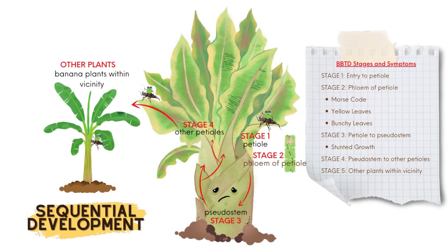In summary, we have learned these things. First, transmission of BBTV is assisted by the insect vector banana aphids. Second, BBTV initially replicates at the phloem of the petioles, then uses the pseudostem as a bridge to infect other parts of the plant, specifically its succeeding leaf petioles. Third, symptoms of BBTD — such as leaf Morse code, stunted growth, and bunched leaves — are all caused by the hormonal imbalance triggered by BBTV. And lastly, other unique factors that may explain the spectrum of symptoms aside from hormonal imbalance are the age of the host plant and the genetic makeup of the plant cultivar. We hope you learned a lot from this video, and may we keep education going. Thank you for watching.